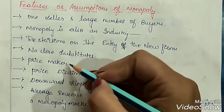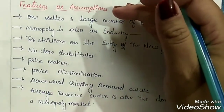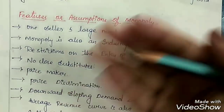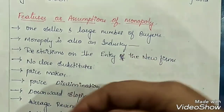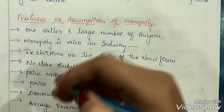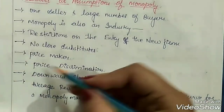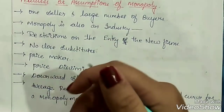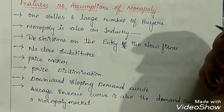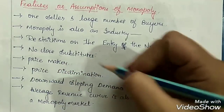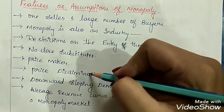Next, price maker. The monopolist or the shopkeeper in the monopoly market is the price maker. Because he is the industry itself, he can fix any price that he wants. He can charge either more or less depending upon the demand for the commodity. Hence, he is the price maker — he has full control over the price. Next, price discrimination. Discrimination refers to differentiation. A monopolist can charge different prices at different points of time — as per demand or as per the status or level of the consumers, he can change the prices. So there is price discrimination or price fluctuation in this type of market.